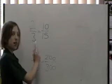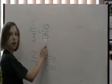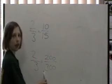So 2 thirds is equivalent to 10 fifteenths, which is equivalent to 200 of 300.